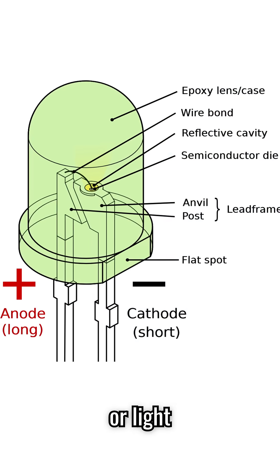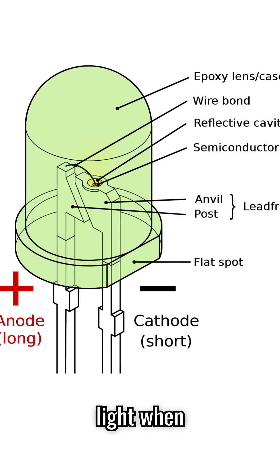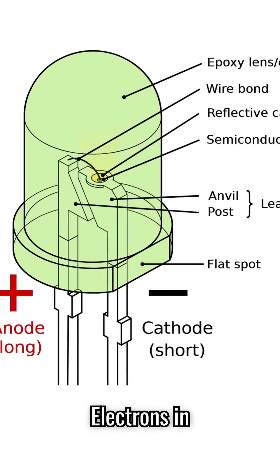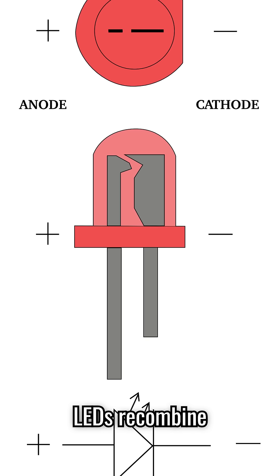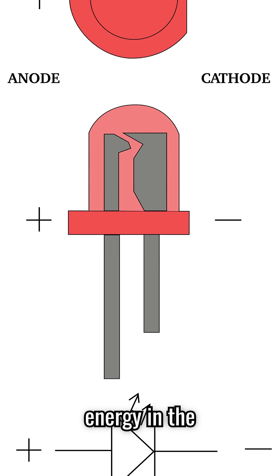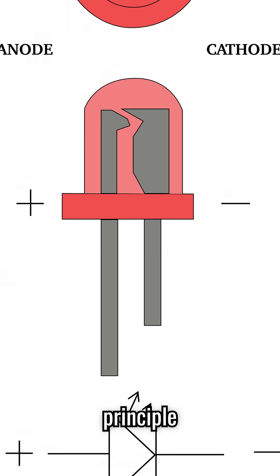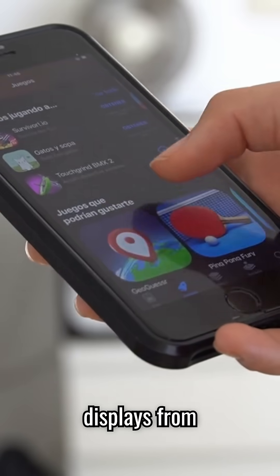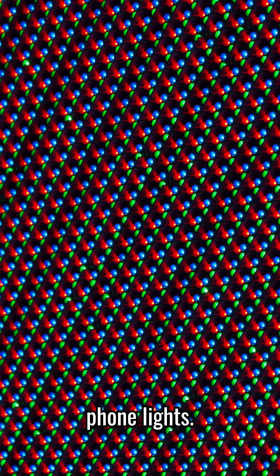LEDs, or light-emitting diodes, emit light when forward biased. Electrons in LEDs recombine with holes, releasing energy in the form of photons. This principle powers your favorite displays, from TV screens to phone lights.